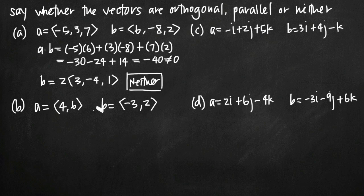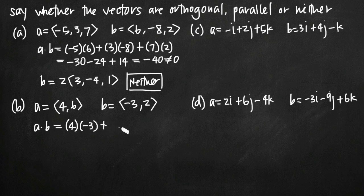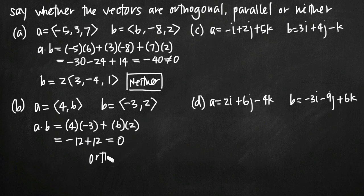Now if we look at example b, where we have a equals (four, six) and b equals (negative three, two), let's try our dot product to see if they're orthogonal. The dot product of a and b is going to be four times negative three, added to the product of our y components six and two. When we do that, we get negative twelve plus twelve, which is equal to zero. Therefore our vectors are orthogonal. They can't be orthogonal and parallel at the same time, so there's no need to check whether they're parallel once we've determined that they are orthogonal.